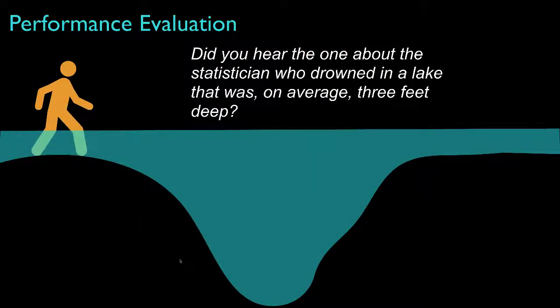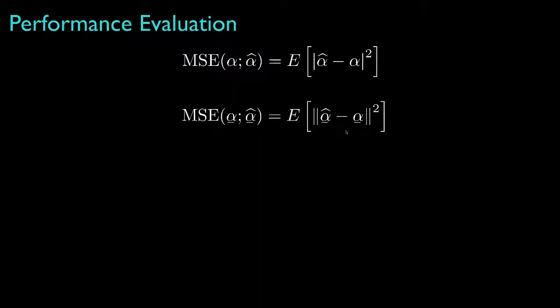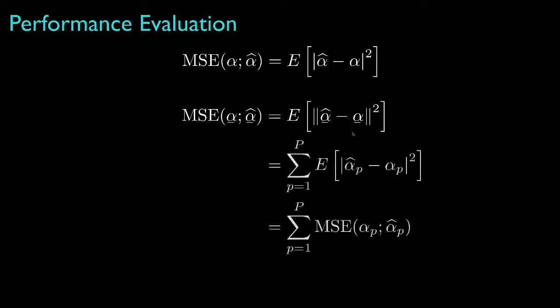All other things being equal, we typically prefer an unbiased estimator. However, all other things are typically not equal, and one of those things is any measure of the variability of the estimation error. For scalar parameters, we address variability by examining the mean square error between the estimate and the parameter, which is simply the expected value of the square of the estimation error. For vector parameters where all parameters share the same units, we might examine the total mean square error — the sum of the individual mean square errors — though we often remain interested in the individual mean square errors regardless.